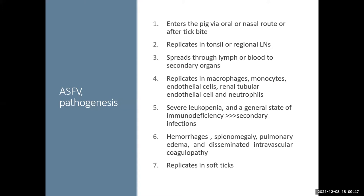The pathogenesis: the virus enters by the oral or nasal route, or after a tick bite. It replicates in the tonsils or lymph nodes, spreads to lymph and blood and secondary organs. It replicates in macrophages, monocytes, and endothelial cells, causing severe leukopenia and secondary immunodeficiency. Secondary infections with hemorrhages, splenomegaly, pulmonary edema, and disseminated intravascular coagulopathy can develop. The virus can also replicate in soft ticks, and there could be soft ticks in the US that could host the virus.